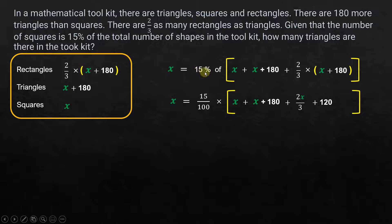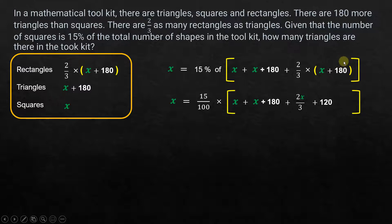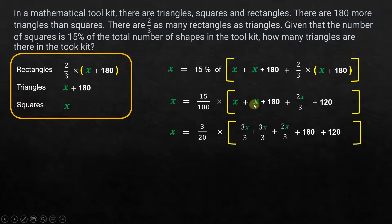We write 15% as 15 over 100. Expanding: x equals (15/100) times (x plus x plus 180 plus (2/3)x plus (2/3)(180)). Two-thirds times x is 2x/3, and two-thirds times 180 simplifies to 120. So we bring all the x terms together by expressing them with a common denominator of 3.